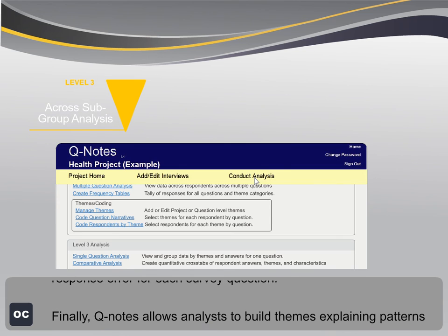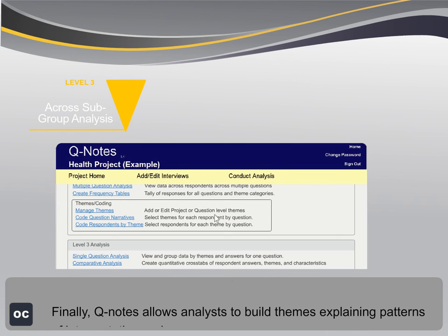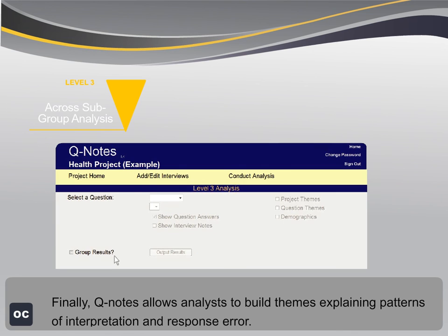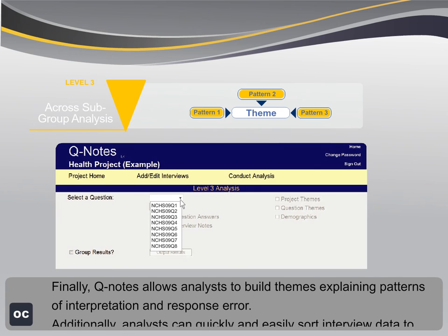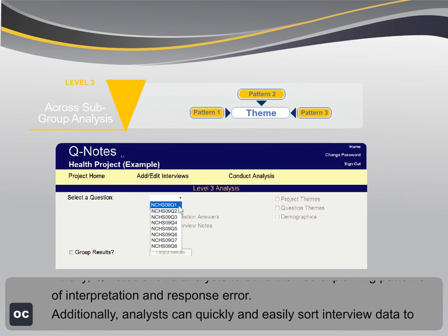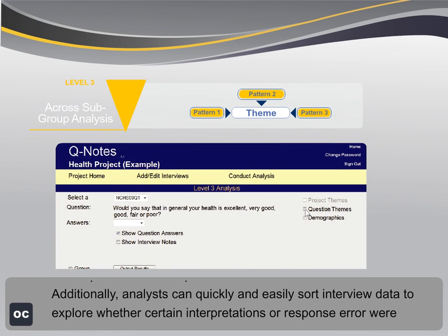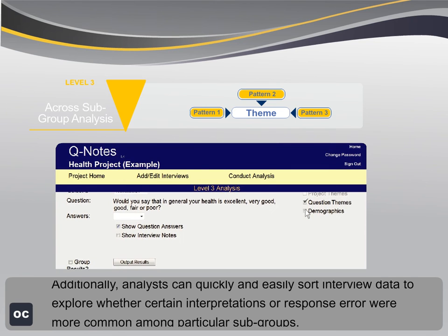Finally, Q-Notes allows analysts to build themes explaining patterns of interpretation and response error. Additionally, analysts can quickly and easily sort interview data to explore whether their interpretations or response errors were more common among particular subgroups.